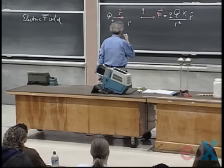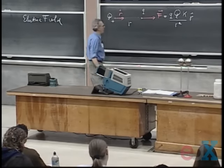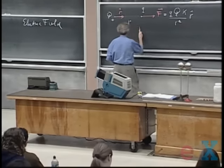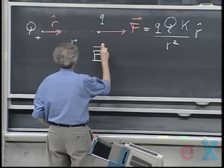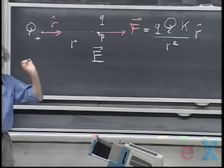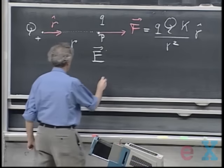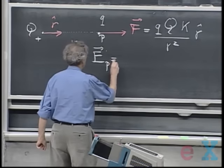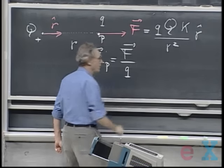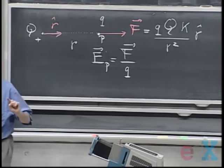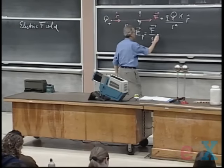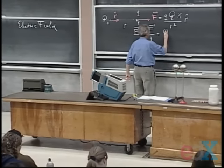Now I introduce the idea of electric field, for which we write the symbol capital E. Capital E at location P, where I have my test charge little Q, is simply the force that a test charge experiences divided by that test charge. So I eliminate the test charge and get something that looks quite similar, but it doesn't have the little Q in it anymore.